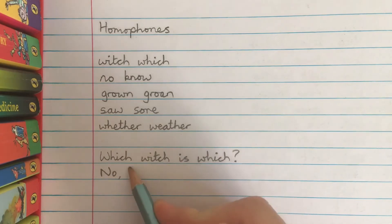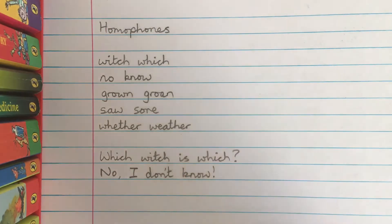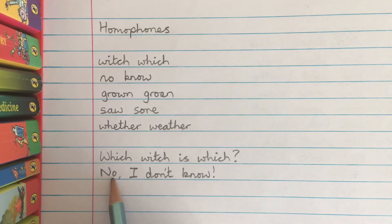No, I don't know. In this sentence, this one refers to the negative no and this one refers to knowing, having knowledge about something.